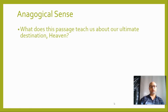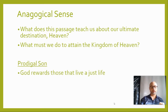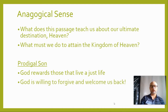The anagogical sense is all about what the passage teaches us about our ultimate destination, which should be the kingdom of heaven. So if we want to get there, what must we do during this life? Going back to the prodigal son, the anagogical sense tells us that through this parable, we learn that God rewards people who live a just life, like the older son who was with him the whole time. At the end of the story, the father speaks these beautiful words to his older son: 'Son, you are always with me and all that I have is yours. But this younger son of yours was dead, and now he is alive. He was lost and he is found.' That shows us that God is always willing to forgive us and welcome us back, as long as we are contrite, we are sorry for our sins, and we make the effort to return to God.